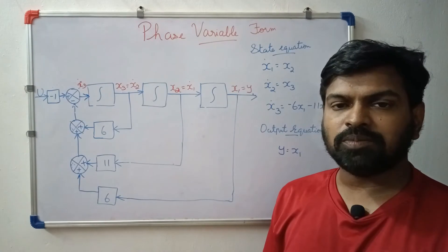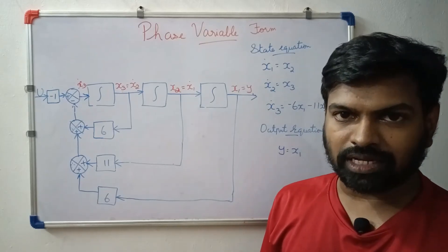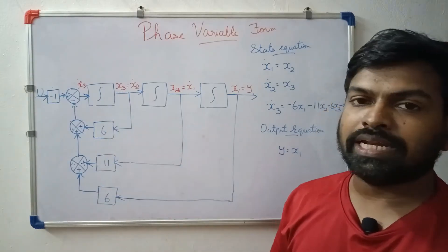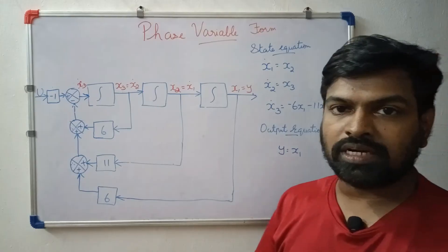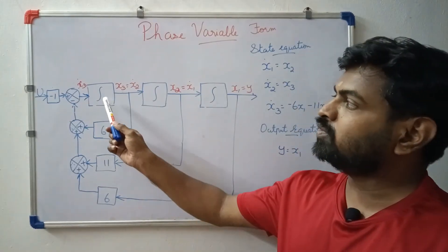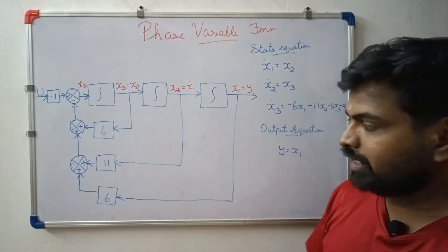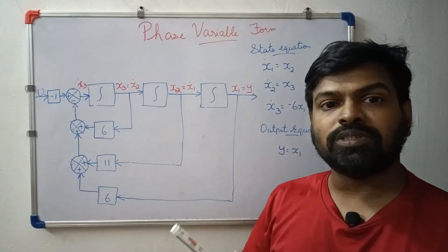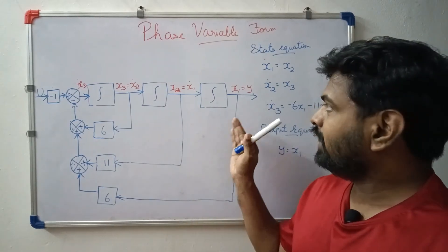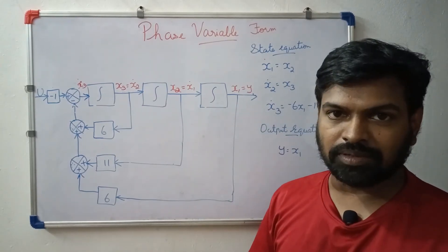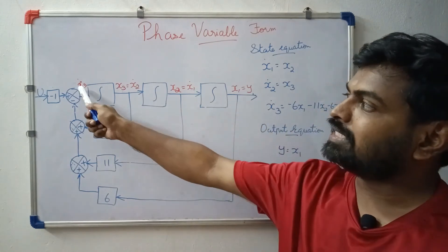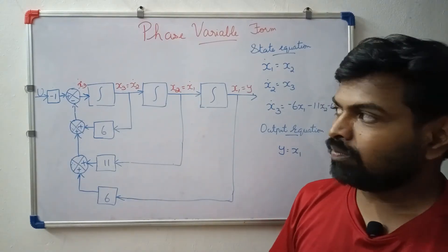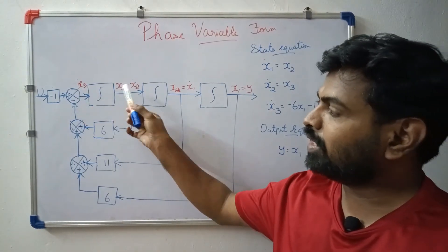The state model is derived. Now we have a block diagram. We have 3 integrators — the state variable count is 3, so we use 3 integral blocks. The right-hand output of the last integrator is x1.